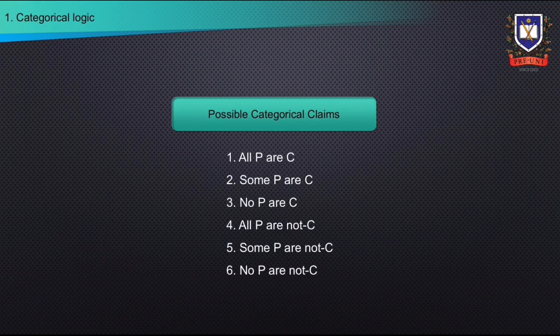Here is a list of all the possible categorical claims you may come across: 1. All P are C. 2. Some P are C. 3. No P are C. 4. All P are not C. 5. Some P are not C.